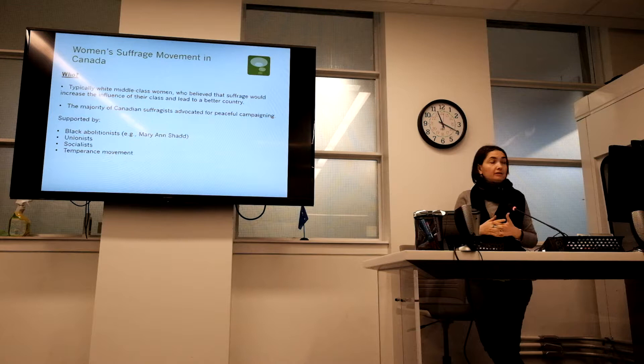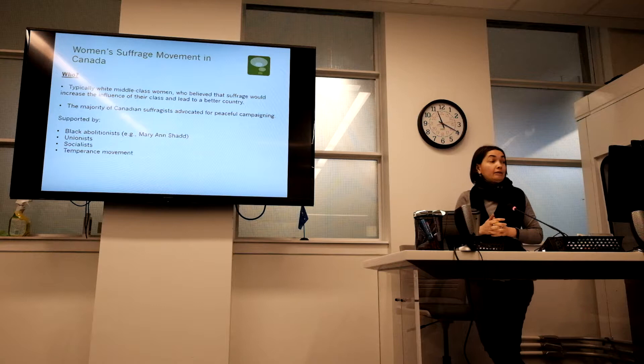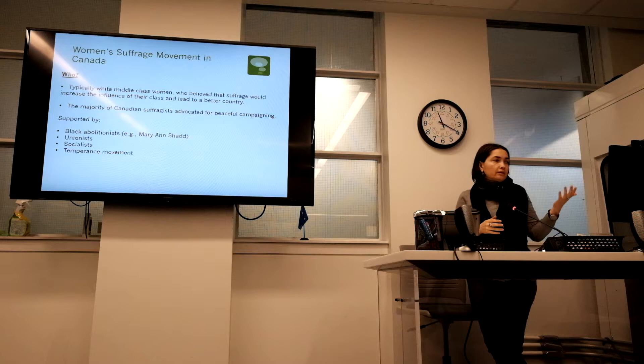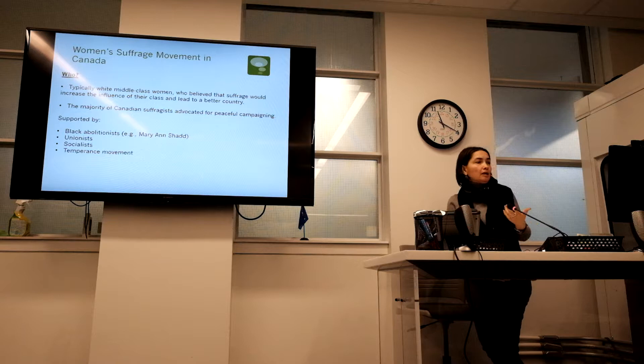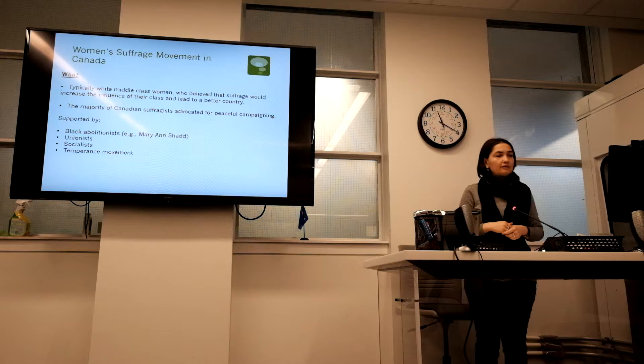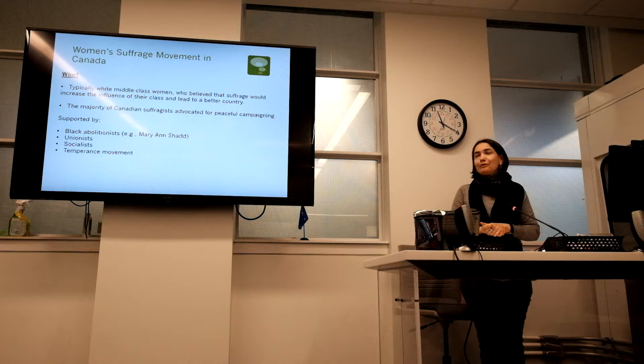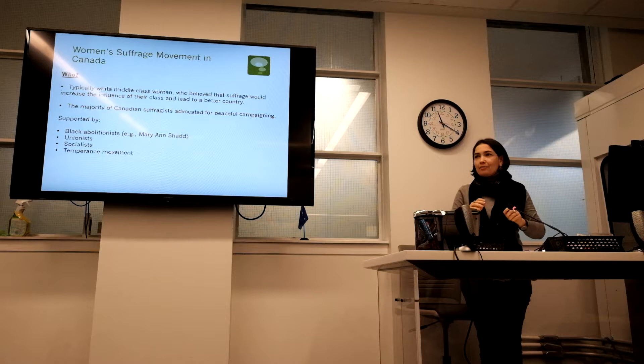Suffragists were also supported by unionists and socialists — those who fought to eliminate social, political, and economic inequality in society. They were also supported by the temperance movement. In fact, many Canadian suffragists were also members of the temperance movement, which was a political campaign in the 19th and early 20th century for moderation or total abstinence from alcohol. Those women believed that alcohol was the root of all evil, and that eliminating it would solve the world's problems.